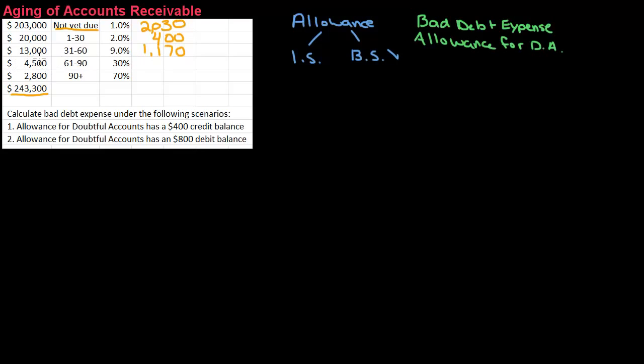Then I've got $4,500, which is 61 to 90 days overdue. And 30% of that is not collectible. Notice there's a big jump, right? If they're 60 days overdue, it's only 9%. But once they hit that 61st day, 30% is probably not collectible. So that would be $1,350 if I do $4,500 times 30%.